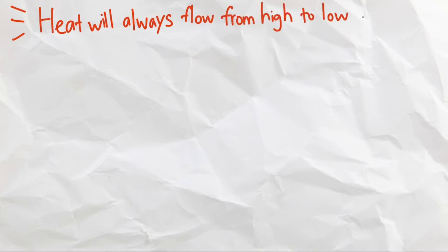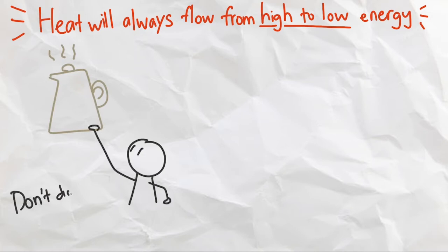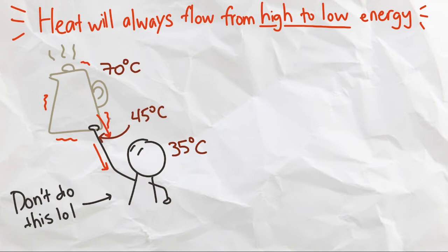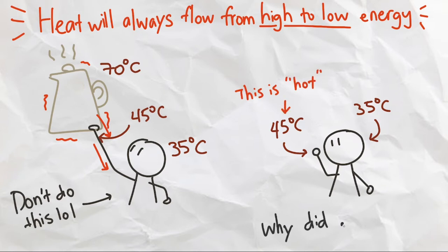Heat will always flow from a higher energy source to a lower one. So when we, at 35 degrees, touch a kettle that's at say 70 degrees, the heat from the kettle will immediately transfer to our hand. This causes our hand to heat up, perhaps to say 45 degrees, which tells our brain that the kettle is hot and snaps our hand away. This is how we feel the heat, by being at a colder temperature than something that's hot.